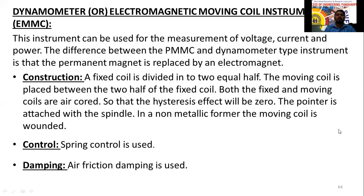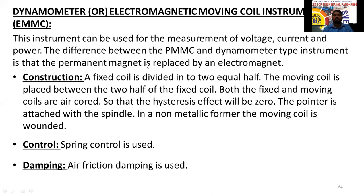The electromagnetic moving coil instrument can be used as a voltmeter, ammeter, as well as a wattmeter — that is a big advantage. We can also measure both AC as well as DC with this instrument, making it applicable for both AC and DC sources.